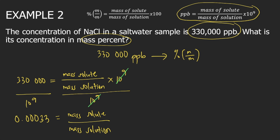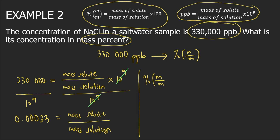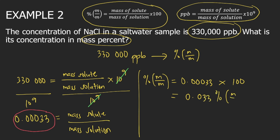Now that you have mass of solute divided by mass of solution, you will use the formula for mass percent. Mass percent is equal to mass of solute divided by mass of solution, which we got as 0.00033, and then just put times 100. So 0.00033 times 100 equals 0.033% by mass. And this is the answer to the question.